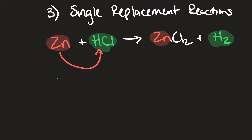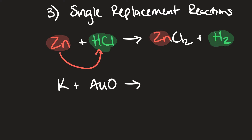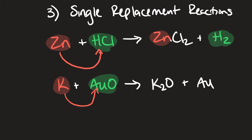Another example: potassium plus gold(II) oxide. Here we have an element with a compound. Since potassium is a metal, it's going to replace the metal within the compound — potassium replaces the gold. So the products are potassium oxide plus gold by itself. That's how single replacement works.